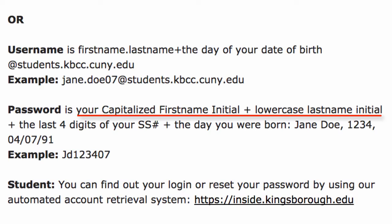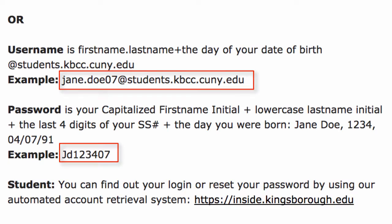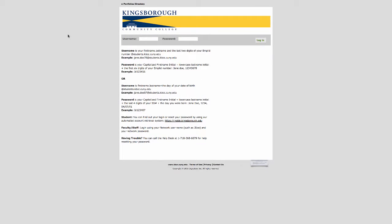Your password is your first initial capitalized, followed by your last initial lowercase, ending with the last four digits of your social security number and the day you were born. It should look something like this. Remember, you use either one or the other syntax, depending on when you started at Kingsborough.